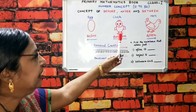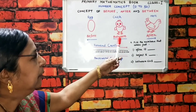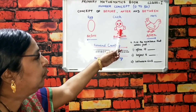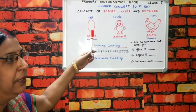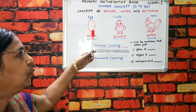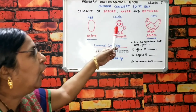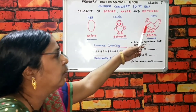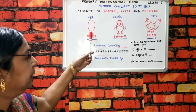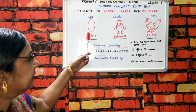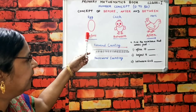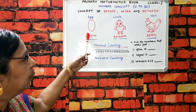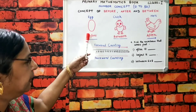Toh hum log yahan se example mein padhte hain. Agar maan lijiye yeh number two hai — between two hai — toh two ke before kya hoga? Two ke before hamesha one hota hai, toh two ke before one hoga. Aur two ke after kya hoga? Two ke after three hoga. Bacchon, mujhe umeed hai aapko is chitr se clear ho gaya: what comes before, what comes after, and what comes between.